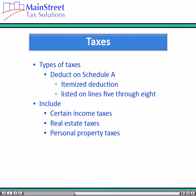There are several types of taxes you can deduct on Schedule A as an itemized deduction. These are listed on Lines 5–8 and include certain income taxes, real estate taxes, and personal property taxes.